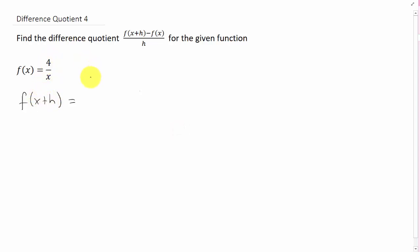So the function given to us was 4 over x. If we replace x with x plus h, which is what this notation tells us to do, we should get something like this.